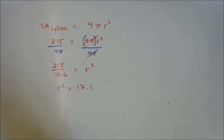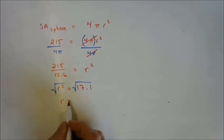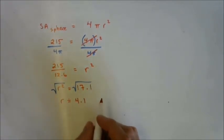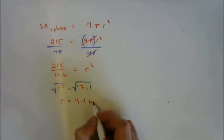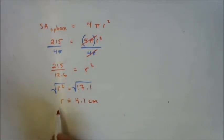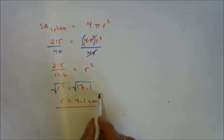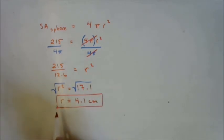Are we done? No. What else do we have to do? Square root both sides. And we get r is approximately 4.1 centimeters. Not centimeters squared, because we're just finding the length of the radius, not the area.